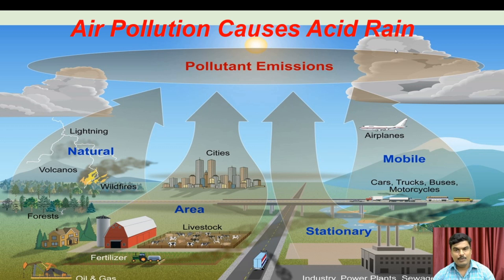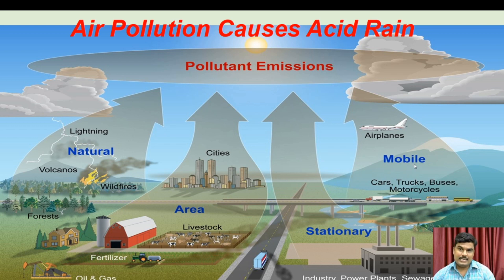Mobile sources such as automobiles — cars, trucks, buses, motorcycles, and aeroplanes — are fuel-consuming vehicles. These fuel-consuming automobiles release carbon dioxide, carbon monoxide, sulfuric acid, and sulfur dioxide, which mix with atmospheric air and cause air pollution.